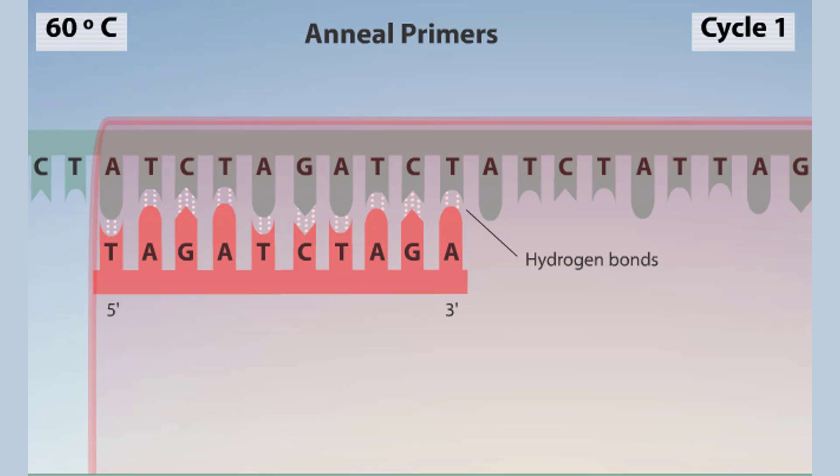Note that the primers and the target DNA follow base pairing rules. An adenine, A, pairs with a thymine, T, and a cytosine, C, pairs with a guanine, G.